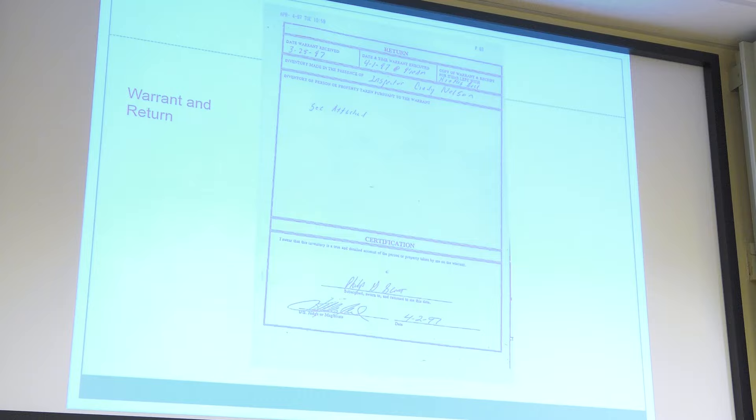Along with that warrant — that permission — will be a document called the return. That is something the officer has to fill out once out there conducting the search. If you find something, you're supposed to write down an inventory of everything that you find. If you don't find anything, you write down that you searched here and there and found nothing. You put together a report that describes what you did on the search and what you found or didn't find. Then you return that document back to the court so that somebody is checking over the shoulder of the officer to make sure they really lived within the limits of the warrant. So those are the normal components of a search warrant.